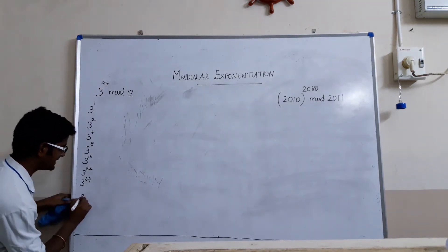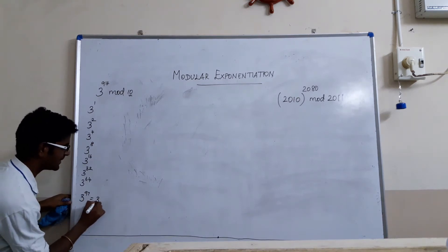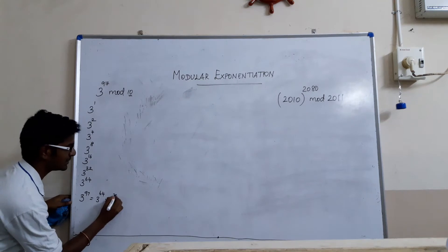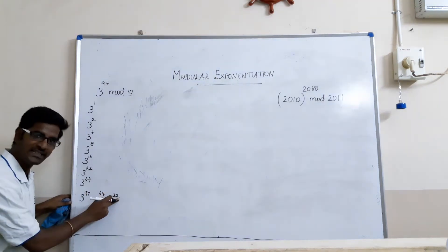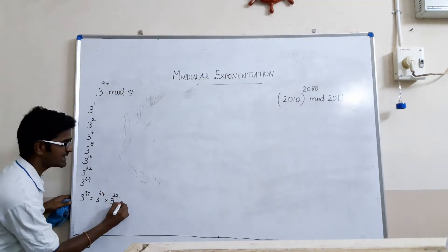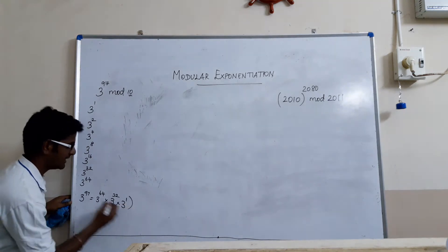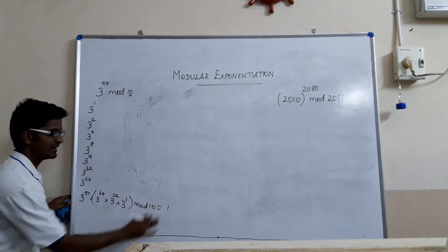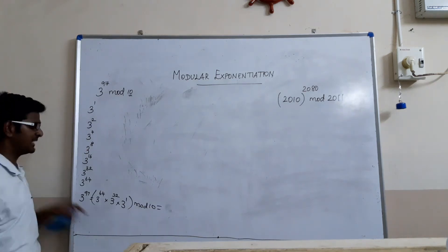So, 3 power 97 can be written as 3 power 64 into, we need 3 power 32. So 64 plus 32 is 96. So we need still 1, so 3 power 1. And we will perform again mod 10 to this and we will get the final answer.